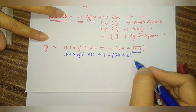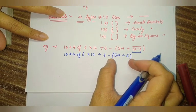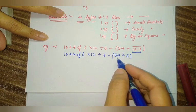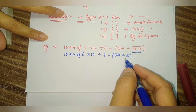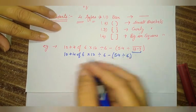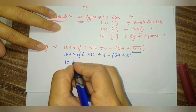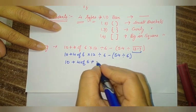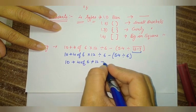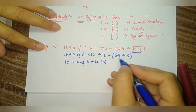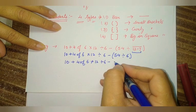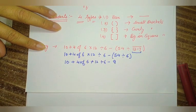So: 10 plus 4 of 6 multiply by 12 divide by 6 minus 54 divide by 6 equals 9. So directly we write the answer 9, and we have removed the small bracket.